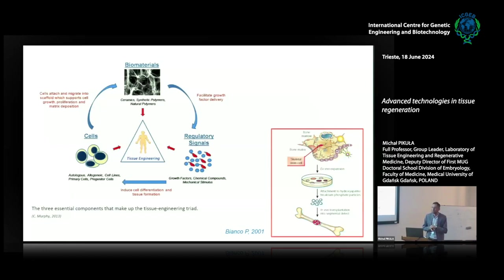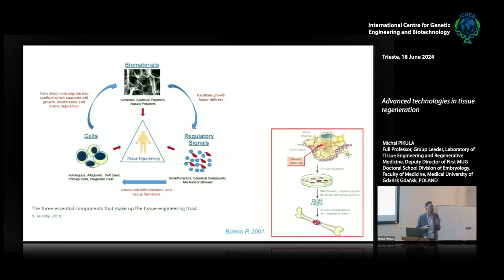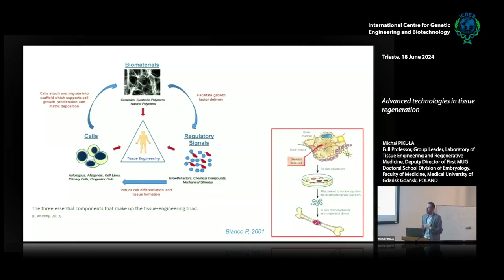I'm not telling all the details because we don't have enough time. But generally, transformed cell lines are very often used also in the United States. However, we still have some safety concern about oncological things. Biomaterials — different biomaterials — I will tell you a few words about that today. And regulatory signals, mainly growth factors, cytokines, but also peptides.